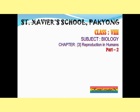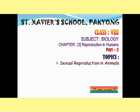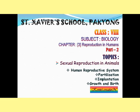Good morning, dear students of class 8. Today in biology we are taking the last portion of reproduction in humans — this is the second part of the chapter. The topics we are going to cover today are sexual reproduction in animals. We will be studying the human reproductive system — male and female — fertilization, implantation, growth, and birth.